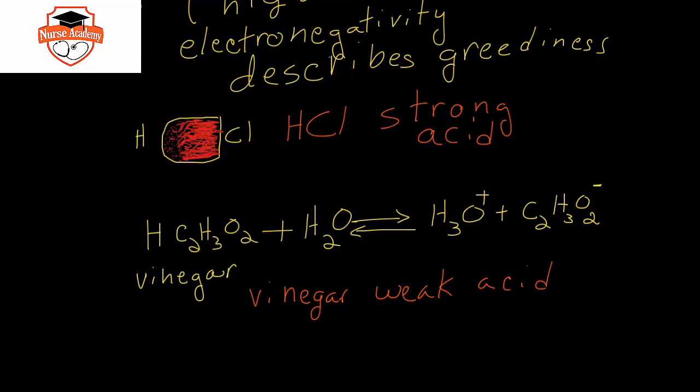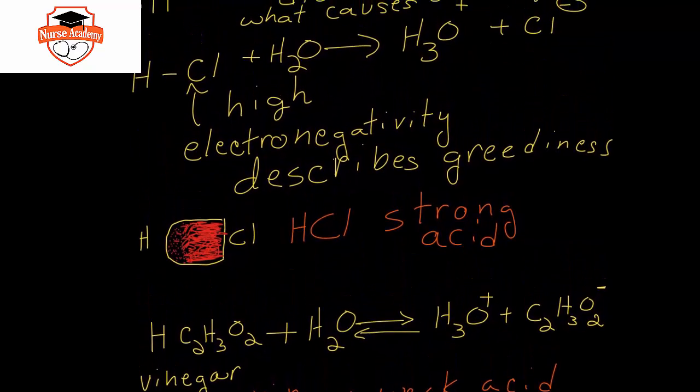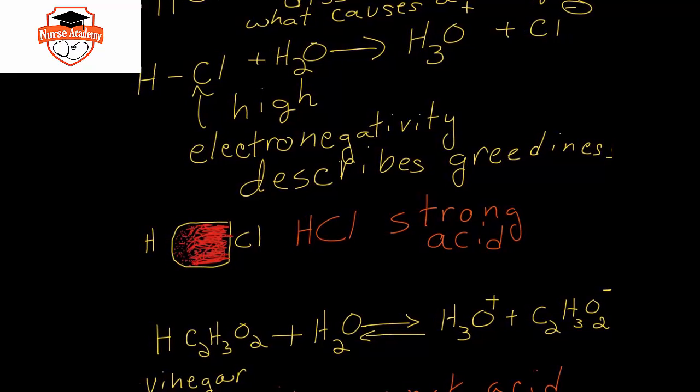You'll notice that if we look at both of these equations of dissociation of our acid, what's formed is this hydronium ion, and it's formed by the donation of the proton or the hydrogen ion from the acid. And this is what characterizes an acid, is this reaction with water to produce hydronium ion.